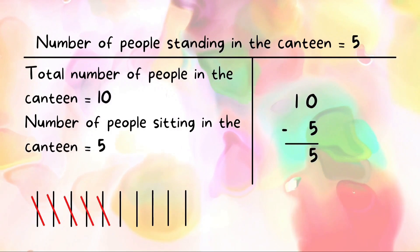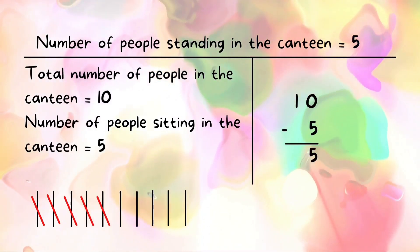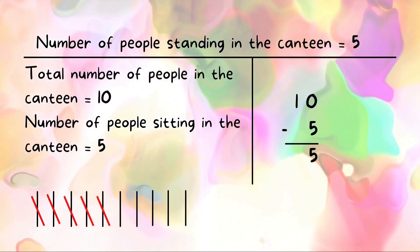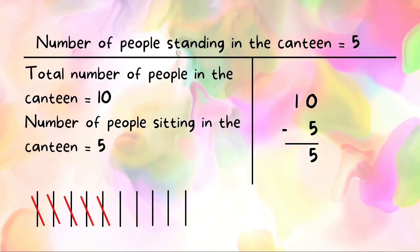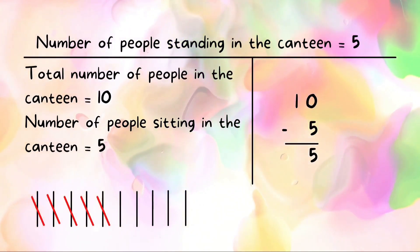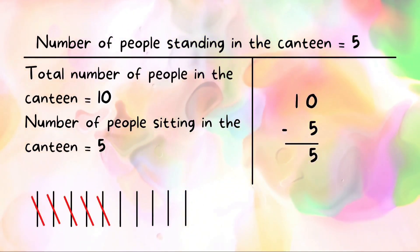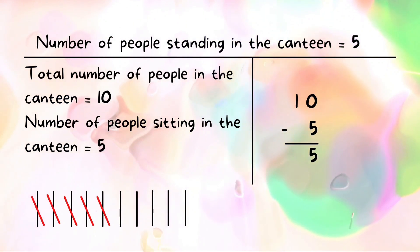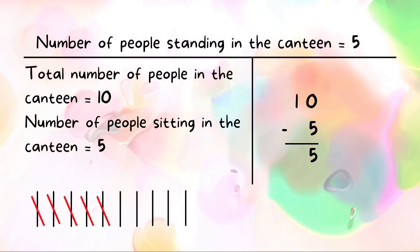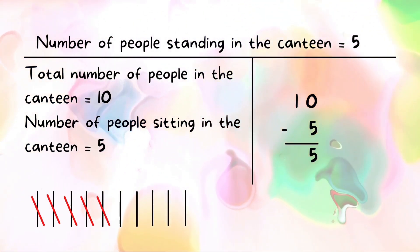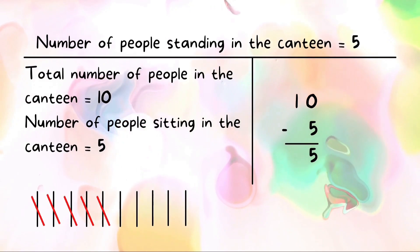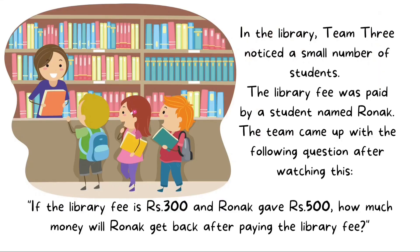Using the T-chart: total number of people in the canteen equals ten, number of people sitting equals five. You can also observe ten sticks aligned, out of which five are being cancelled. Therefore, the number of people standing in the canteen equals five, since ten minus five gives us five.